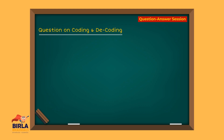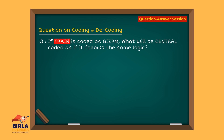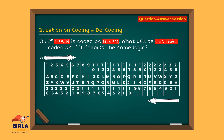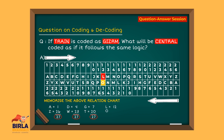Let's solve a question on coding and decoding. If 'train' is coded as G, I, Z, R, M, what will 'central' be coded as following the same logic? First, you have to find out the relation given in the question. Here, you can see that the first letter T is replaced by G, and N is replaced by M. Memorize the relation chart. When you add the two position numbers, you get 27. For example, L from the left plus O from the right: 12 plus 15 equals 27. Now, T is the 20th alphabet from the left, so 27 minus 20 is 7, and the 7th alphabet is G.